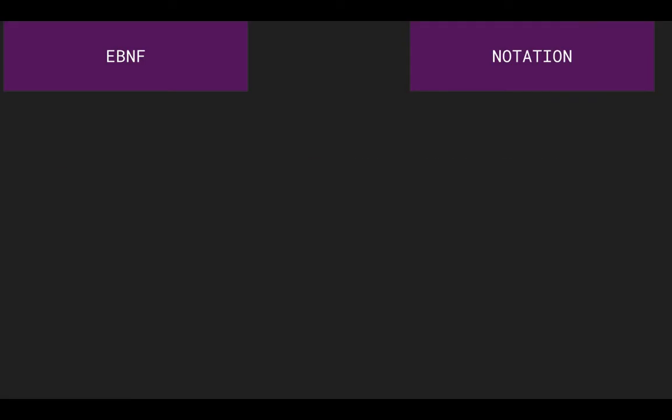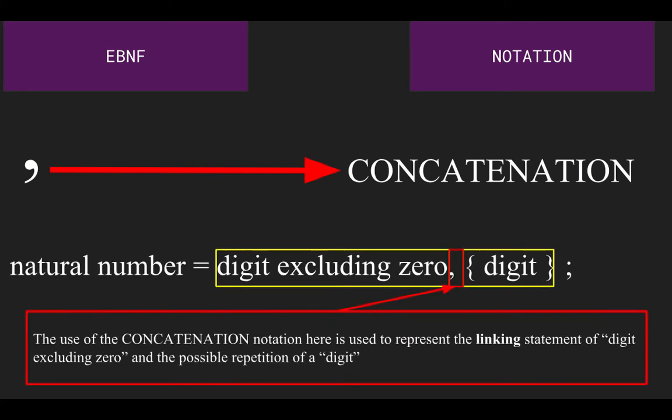Next, we use the comma, which is named concatenation, which is used to represent linking statements. In this example, the statement digit excluding 0 is linked with the next statement of the possible repetition of digit.